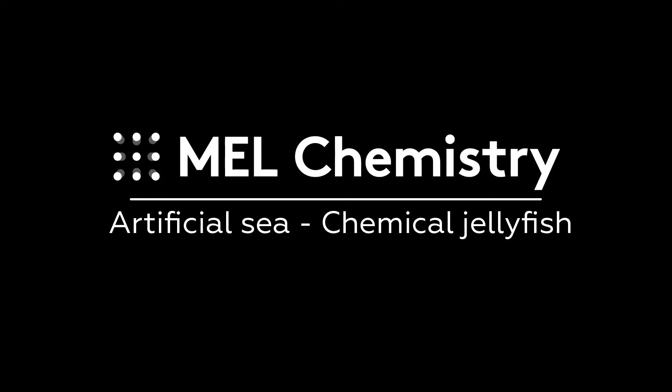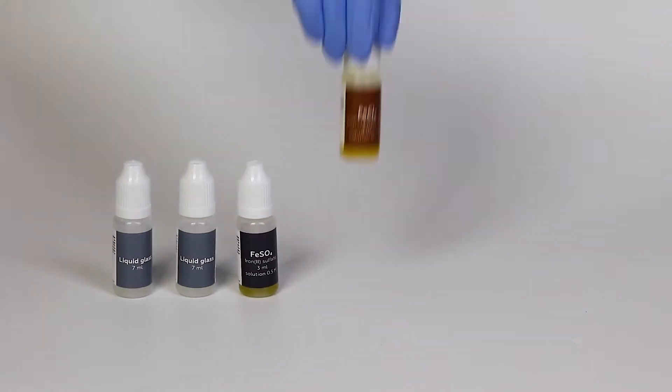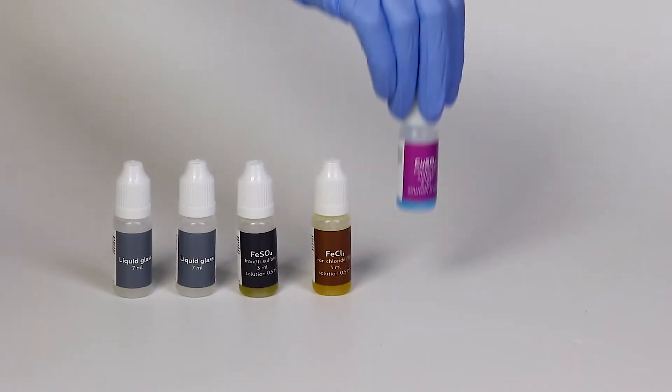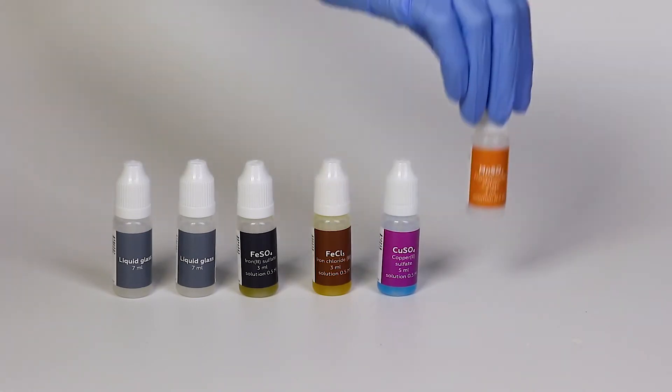For the chemical jellyfish experiment, you will need two bottles of liquid glass, the solutions of ferrous sulfate, ferric chloride, copper sulfate, manganese sulfate and a petri dish.